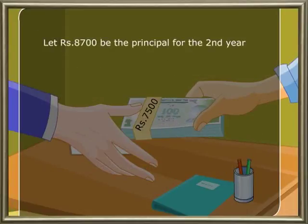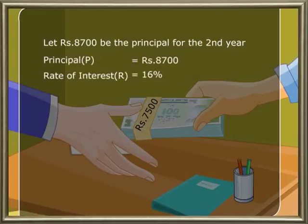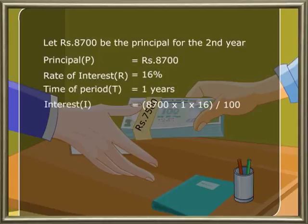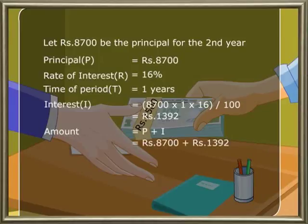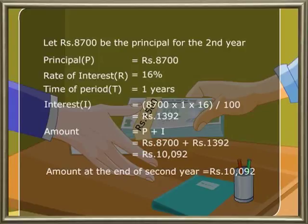From a rate of interest of 16 percent and a time period of one year, the simple interest for the second year would be 8700 into 1 into 16 by 100, so the interest now becomes 1392. The amount is equal to principal plus interest, which is 8700 plus 1392, which is equal to 10092. The amount at the end of the second year is rupees 10092.